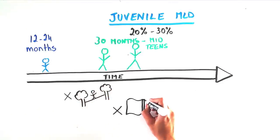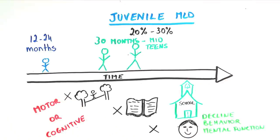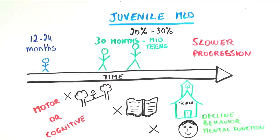clumsiness or a decline in school performance, changes in behavior or mental functioning. Although the progression of juvenile MLD is slower than late infantile MLD, it is still very severe.